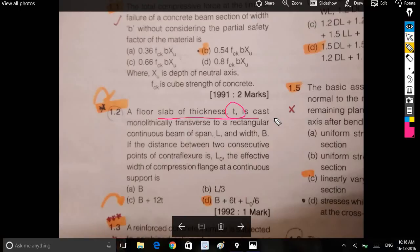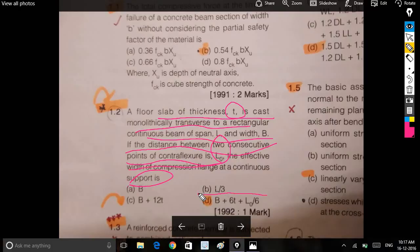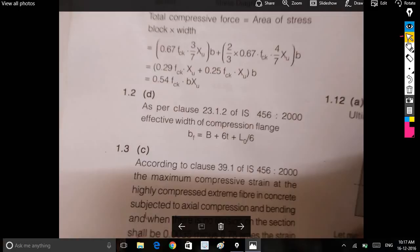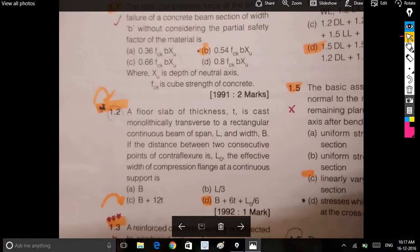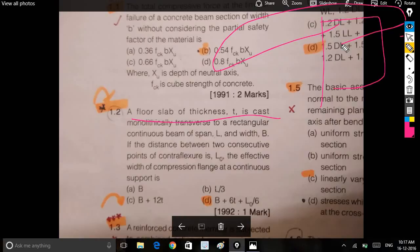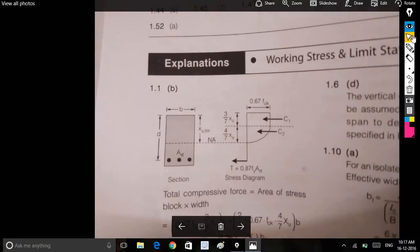The floor slab of thickness is cast monolithically transverse to a rectangular continuous beam. The distance between two consecutive points of contraflexure is L0. The effective width of the compression flange at continuous support is B plus 6T plus L0 by 6.